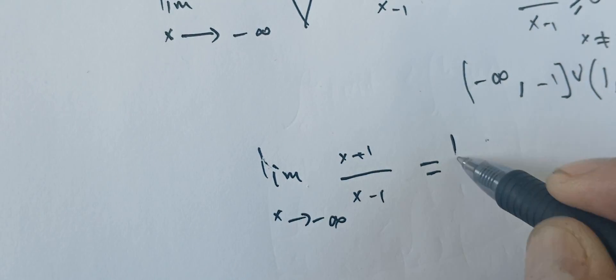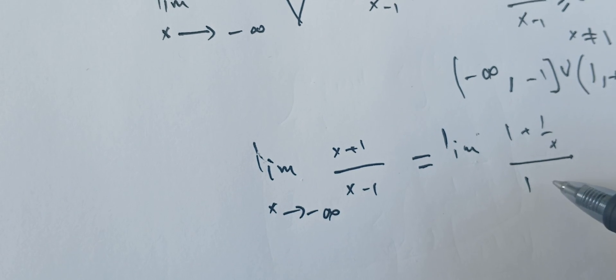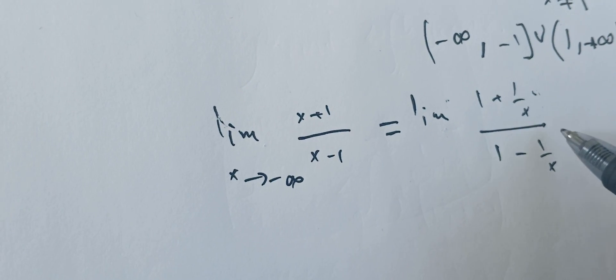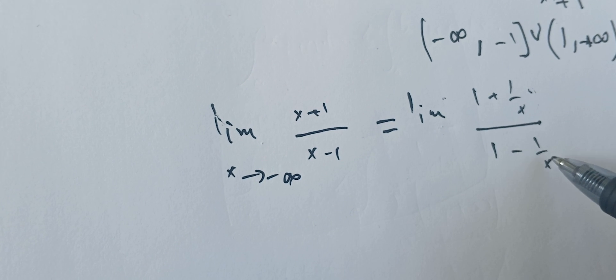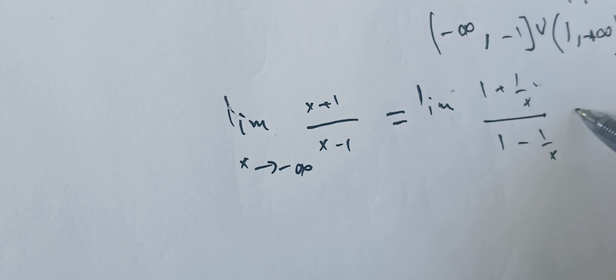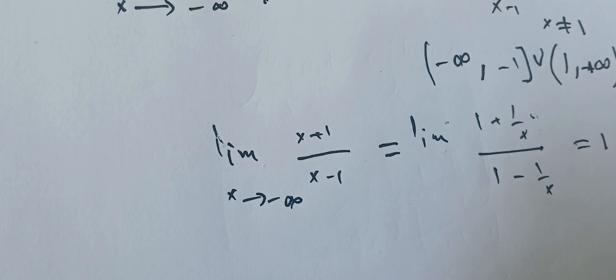We can write this as the limit of 1 plus 1 over x, over 1 minus 1 over x. We know that 1 over x and minus 1 over x will go to 0, and therefore we have 1 over 1, which is 1. Therefore we have the square root of 1, which is 1.